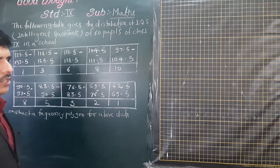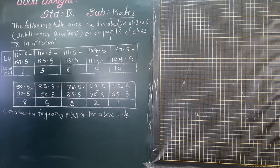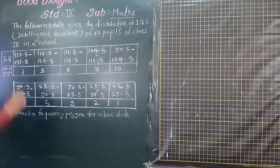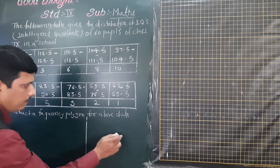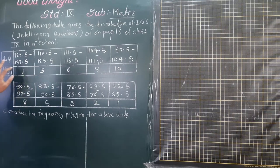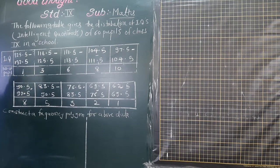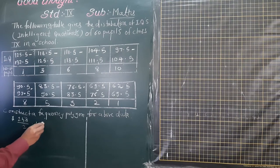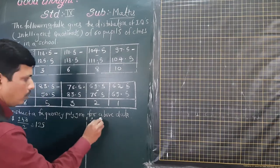The first interval is 125.5 to 132.5. To find the class mark, I add the lower limit plus the upper limit divided by 2. We will use this same formula for all intervals. So for the first interval: 125.5 plus 132.5 equals 258. Then 258 divided by 2 equals 129. So our first plotting point is 129, with a frequency of 1. So x-coordinate is 129 and y-coordinate is 1.